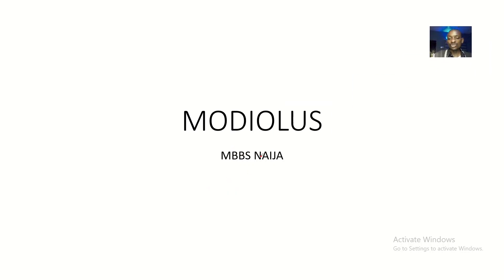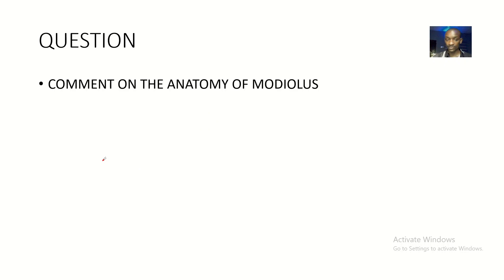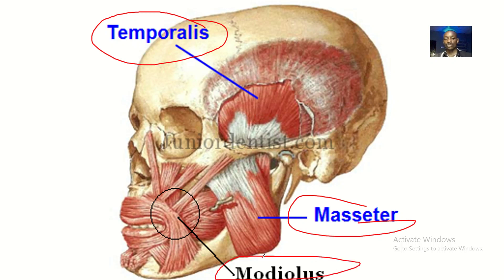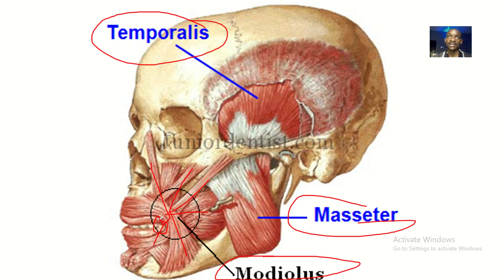Today we'll be talking about the anatomy of the modulus — where it is found and what structures actually form it. The question is: comment on the anatomy of the modulus. This is basically the temporalis and masseter, and down here you can see the modulus. It is like a wheel, with many muscles coming to insert — like a bicycle wheel or a cat wheel — located beside the angle of the mouth.